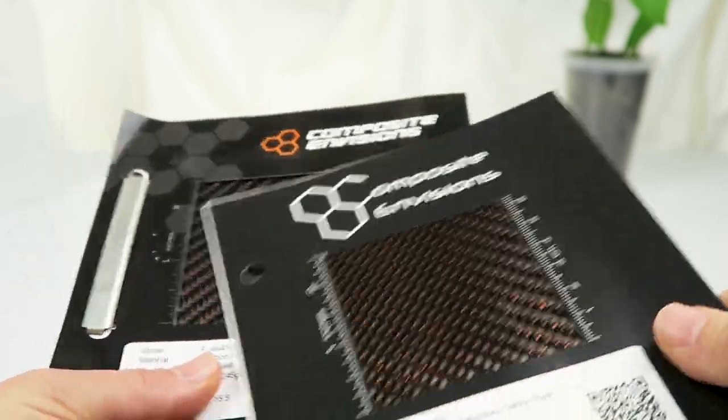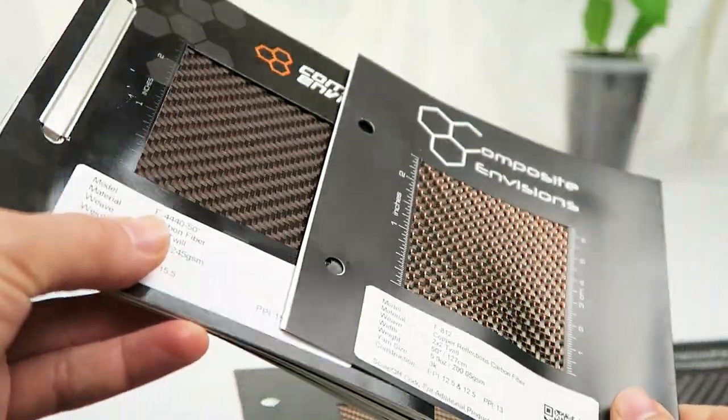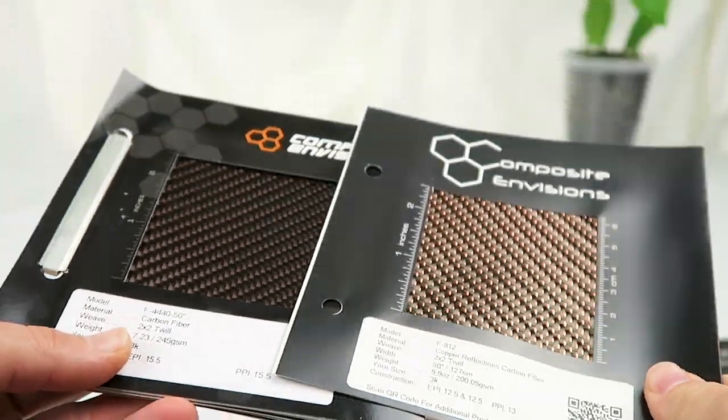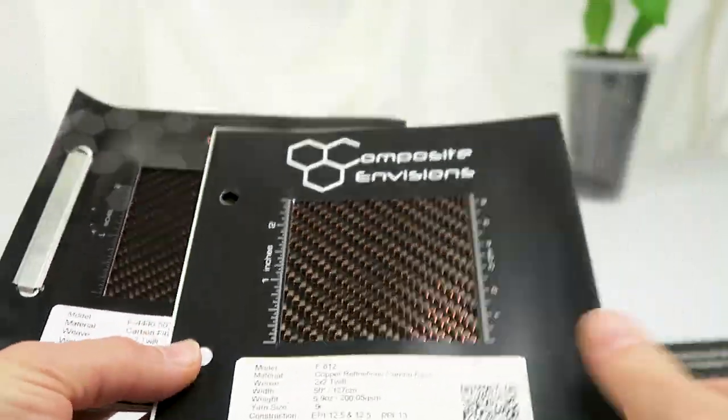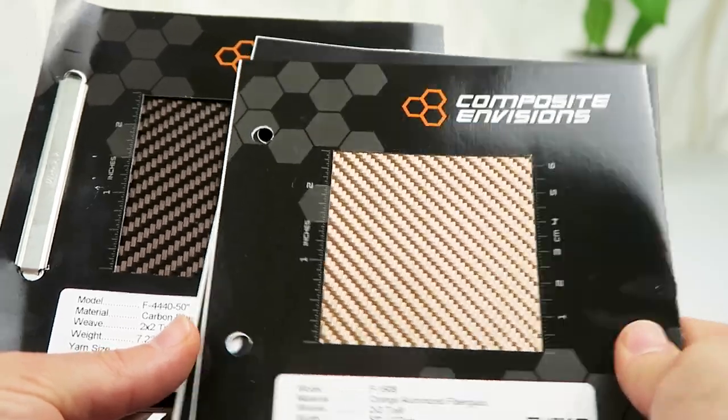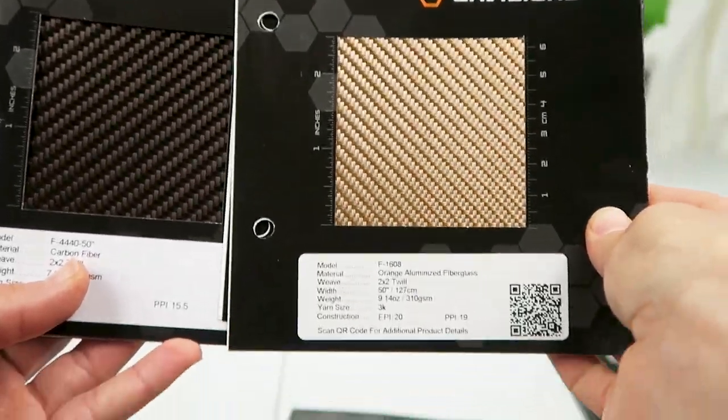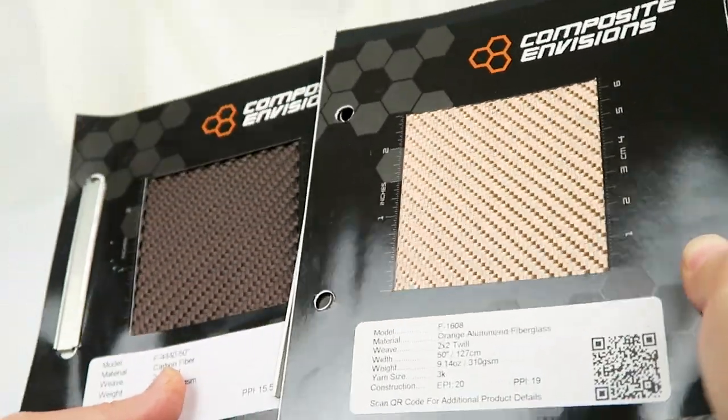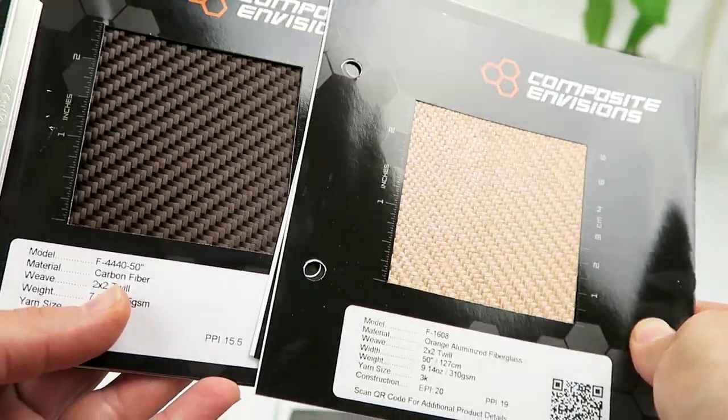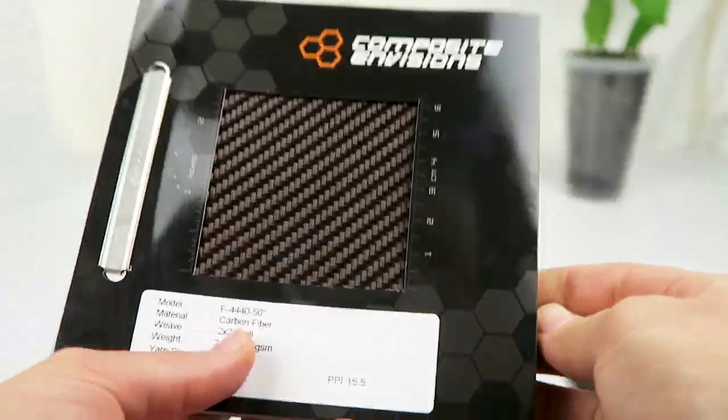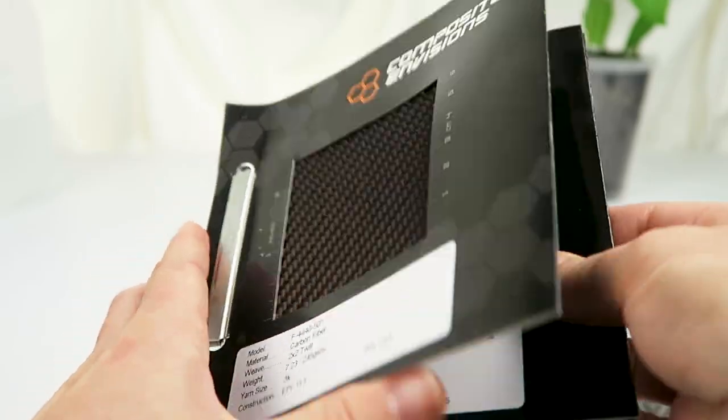For reference, here are a few other options that are similar colors to some of these. This is the Copper Reflections, and the carbon fiber isn't dyed, but it does have that copper thread running through the fabric. There's also a dyed fiberglass that's orange aluminized, which is in the same color family but much lighter, and of course that's fiberglass, not carbon fiber.